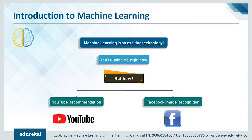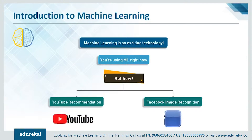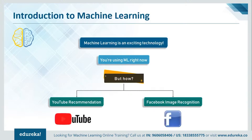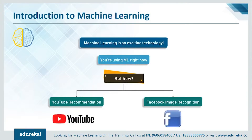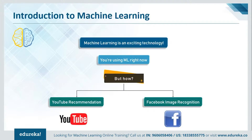Two major things came to my mind when I think of machine learning: YouTube recommendations and Facebook image recognition. With YouTube, let's say you're watching Edureka's newly launched Python tutorial video. As soon as that's done, you probably get a statistics for data science using Python video as a recommendation. YouTube analyzes everything from what you watched previously to the keywords in the videos you've watched.